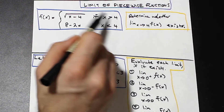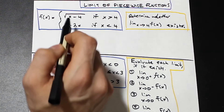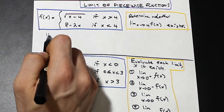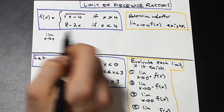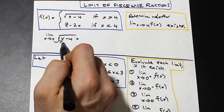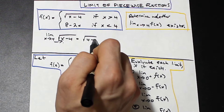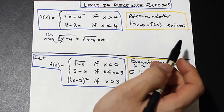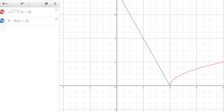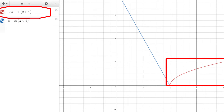We're going to take the limit of the upper function as x approaches 4 from the right. So the limit as x approaches 4 of root(x minus 4) — we plug in 4, giving us root(4 minus 4), which equals 0. If you take a look at the screen, I've plotted both functions. On the right, the red function is the square root function, root(x minus 4).